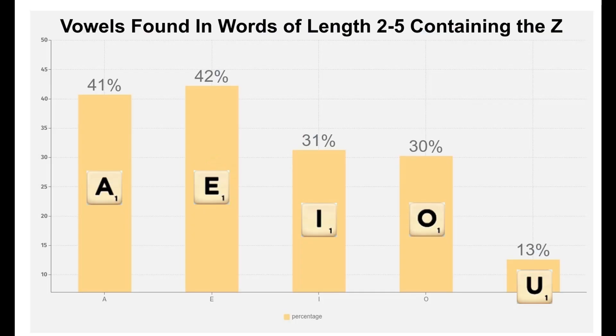Which tiles work best with the Z? First, let's look at the vowels. Because we've established that it's very difficult to bingo with the Z, we'll focus on words containing the Z between two and five letters in length.